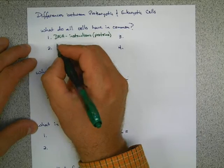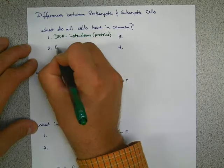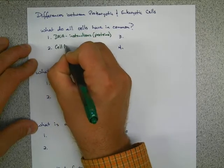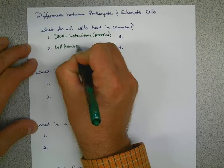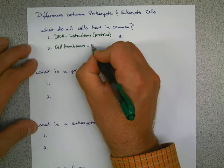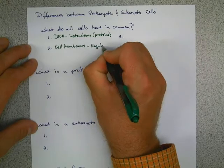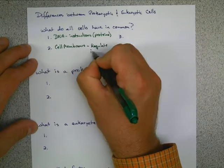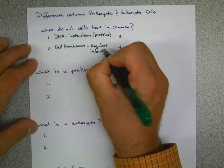The second thing that all cells are going to have is a cell membrane. The cell membrane regulates what comes in and what comes out of the cell. So we're going to write down regulate what comes in and out of the cell.